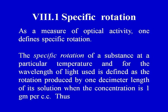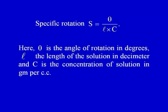Specific rotation as a measure of optical activity: the specific rotation of a substance at a particular temperature and for the wavelength of light used is defined as the rotation produced by 1 decimeter length of its solution when the concentration is 1 gram per cc. Thus, the specific rotation S is given by theta upon L times C, where theta is the angle of rotation in degrees, L is the length of the solution in decimeters, and C is the concentration in grams per cc.